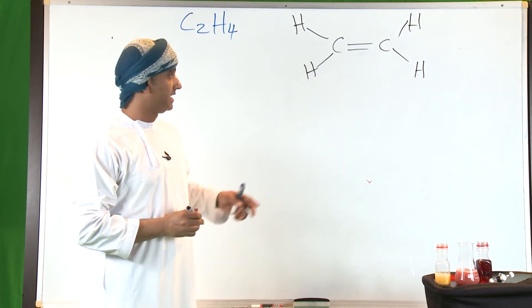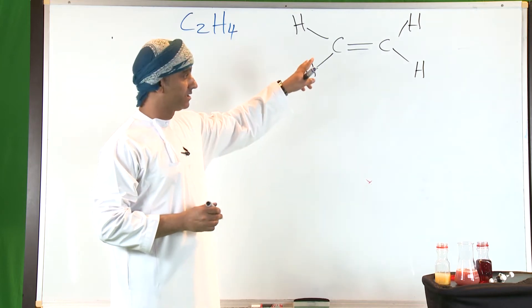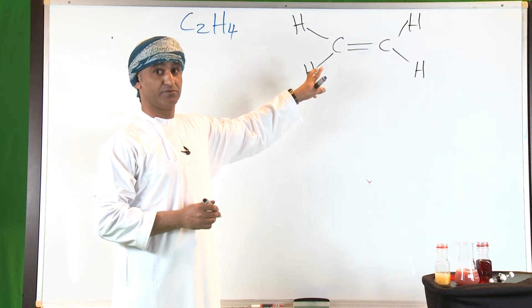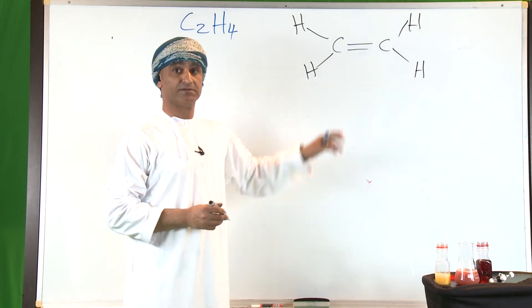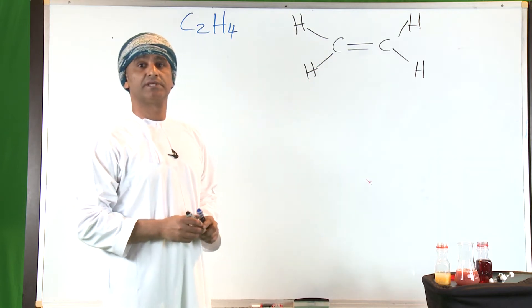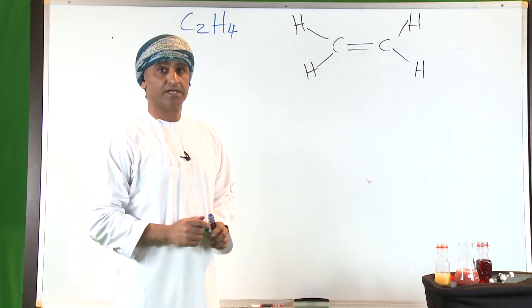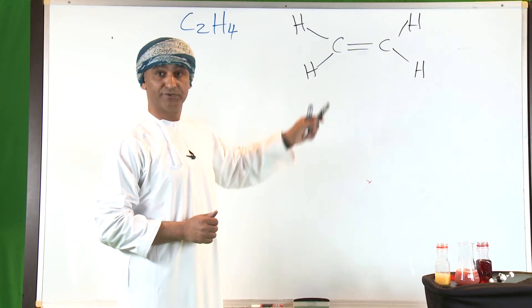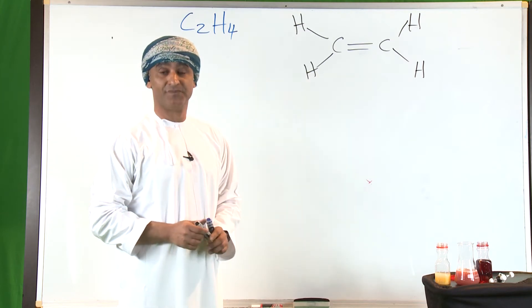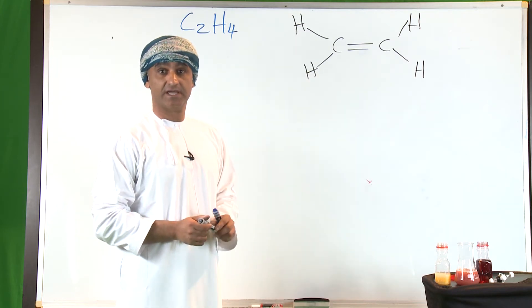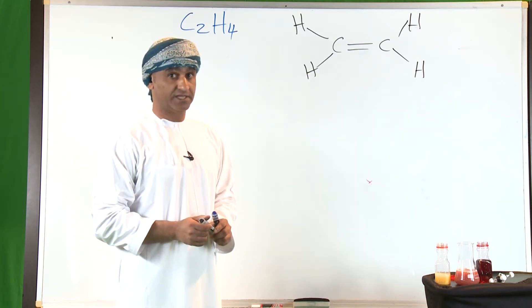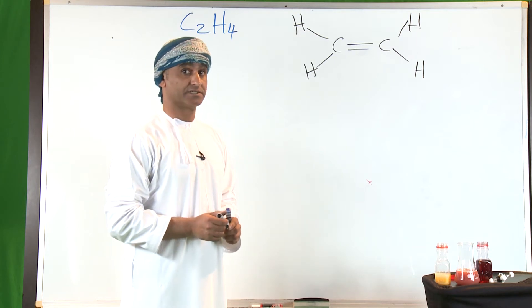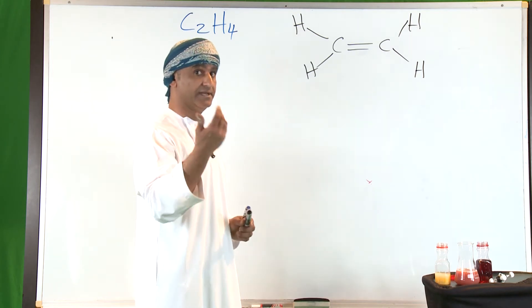According to the VSEPR model, that double bond — just like multiple bonds in general — is counted as a single effective electron pair. Therefore, around each carbon in this case there are three effective electron pairs.